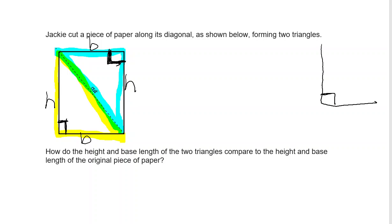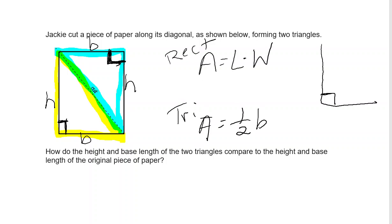When calculating the area of the entire rectangular sheet of paper, we can also call base and height 'length and width' — it's the same thing. So the base and the height of the two triangles are the same as the length and the width of the entire rectangle. The area of a rectangle is length times width, but the area of a triangle is half base times height because cutting the rectangle diagonally creates two halves. The base and height of both triangles are equal to those of the original piece of paper.